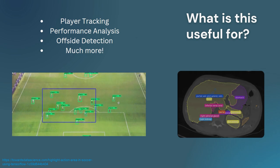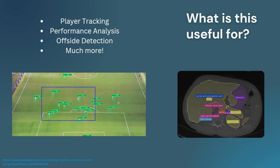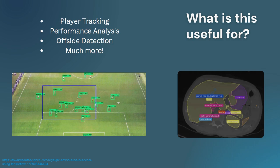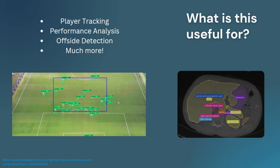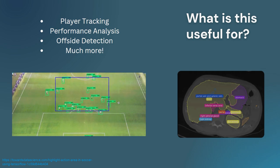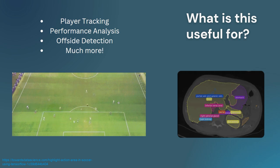Another good reason for building this type of machine learning model is just so you can learn computer vision and building machine learning models. It's a very good use case, and it's pretty easy to do using V7. I think it's fun — everyone loves soccer, right?